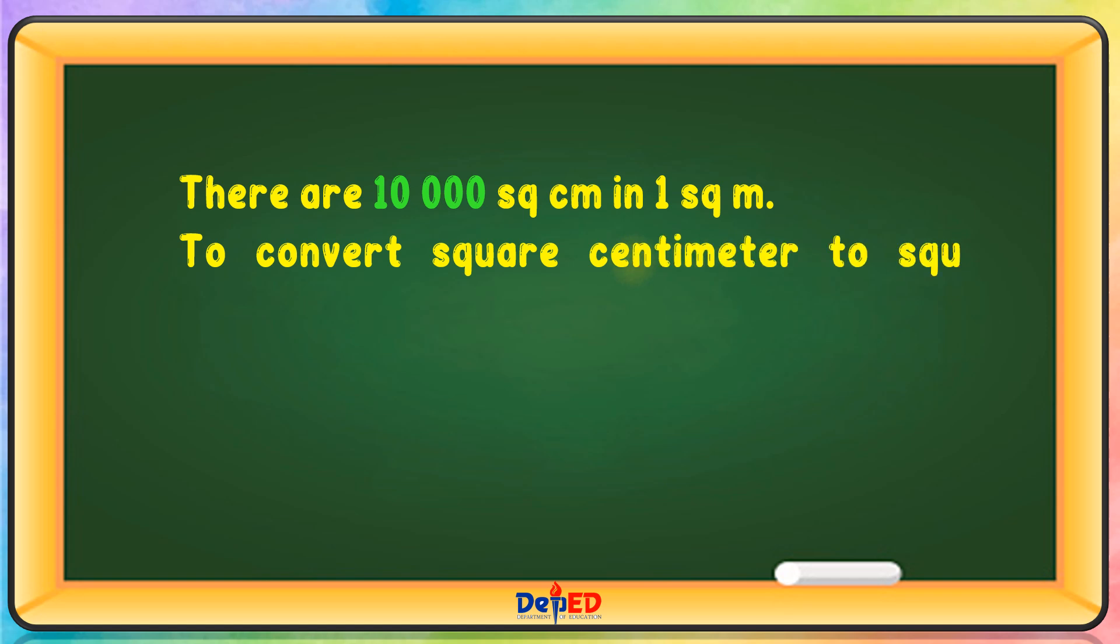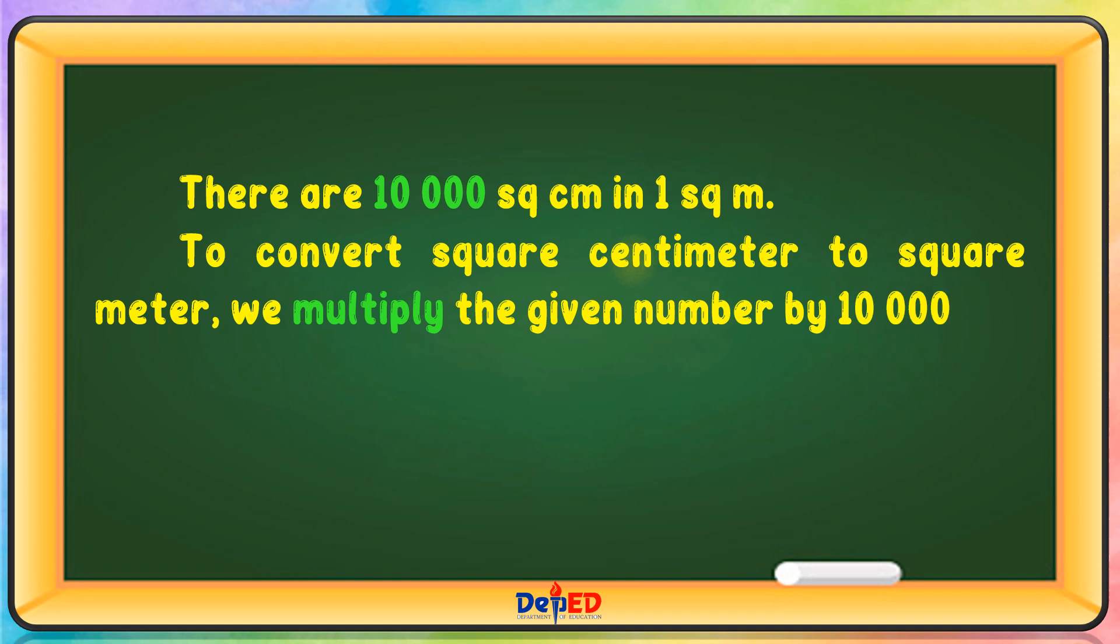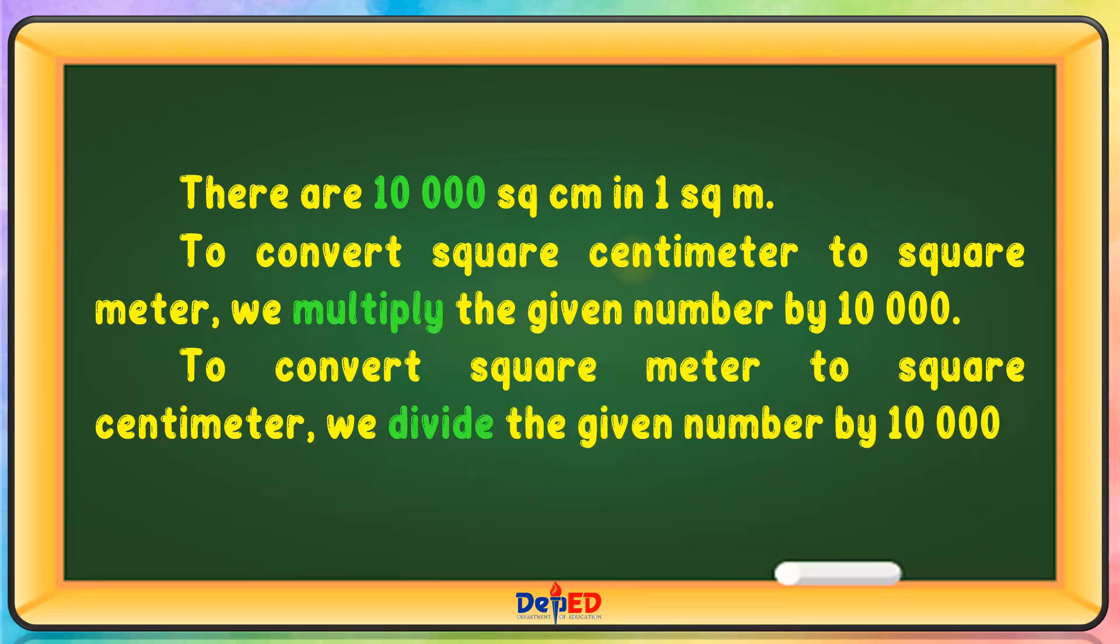There are 10,000 square centimeter in one square meters. To convert square centimeter to square meter we multiply the given number by 10,000. To convert square meter to square centimeters we divide the given number by 10,000.